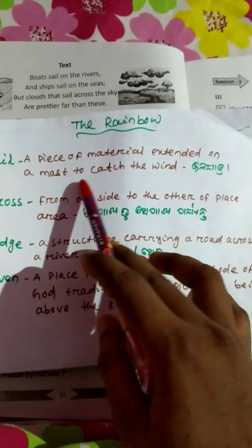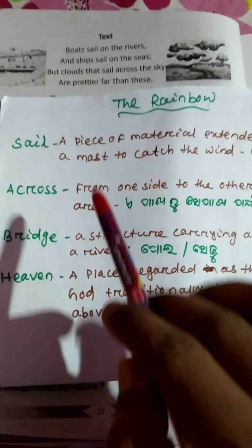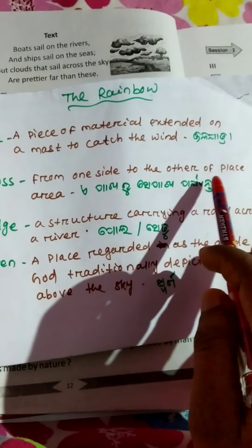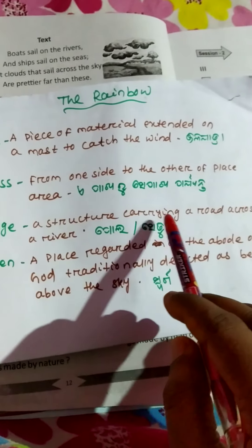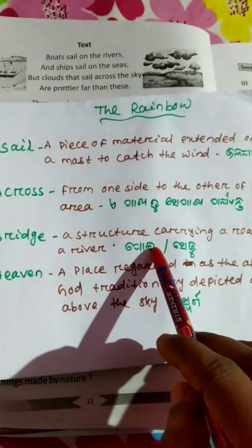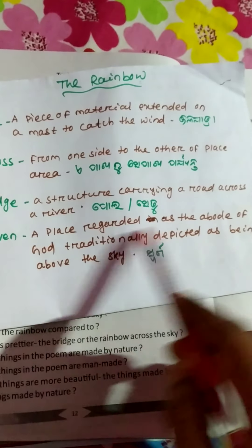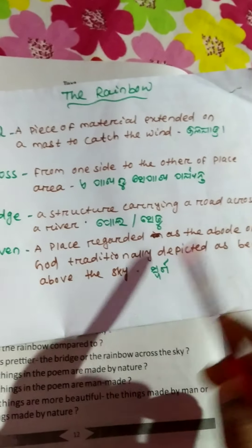So students, now look at the hard words given in this page. A sail is a piece of material extended on a mast to catch the wind. Across means from one side to the other of a place or area. A bridge is a structure carrying a road across a river. Heaven is a place regarded as the abode of God, traditionally depicted as being above the sky.